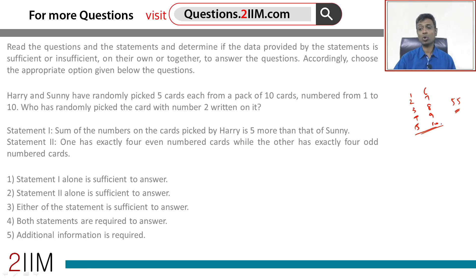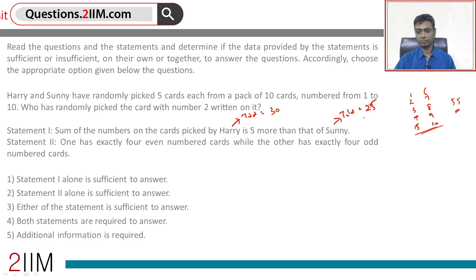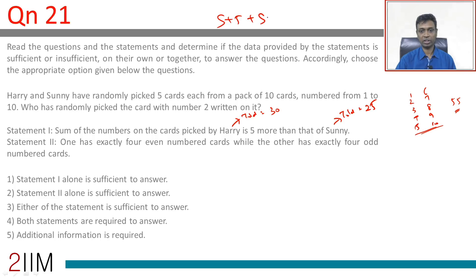Harry's sum is 5 more than that of Sonny, so Harry's total is 30 and Sonny's total is 25. They add up to 55. So Sonny plus 5 plus Sonny equals 55, meaning Sonny's total is 25 and Harry's total is 30.